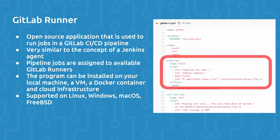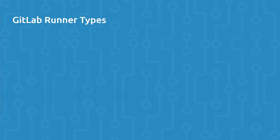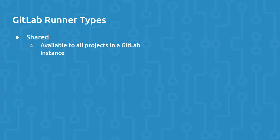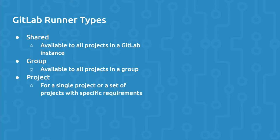GitLab Runners execute the work defined in GitLab pipeline jobs. And there are multiple types of GitLab Runners. First, you can utilize a Shared Runner — shared runners are available to all projects in a GitLab instance. Then there are Group Specific Runners, which are available to all projects in a specific GitLab group. And then there are Project Specific Runners, which is the type we're going to use in this tutorial — used on a single GitLab project or a set of projects with specific requirements.